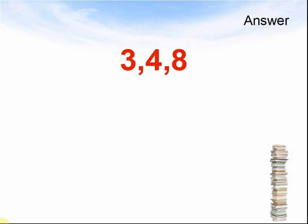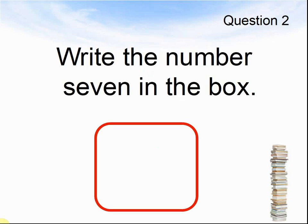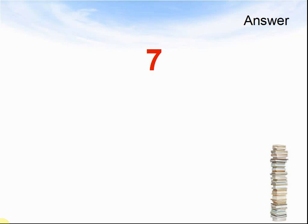Let's look at the next question. Question 2. Write the number 7 in the box. Pause the video until you are ready for question 3. Here comes the answer. The answer was a 7, like this. You can draw it with your finger in the air.